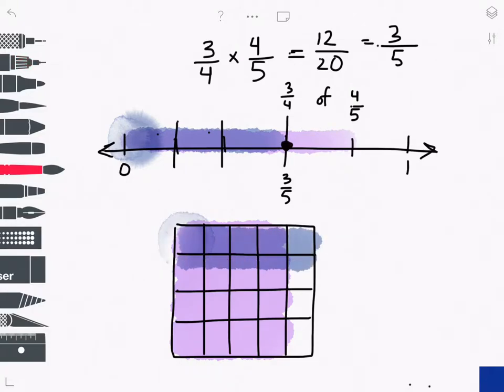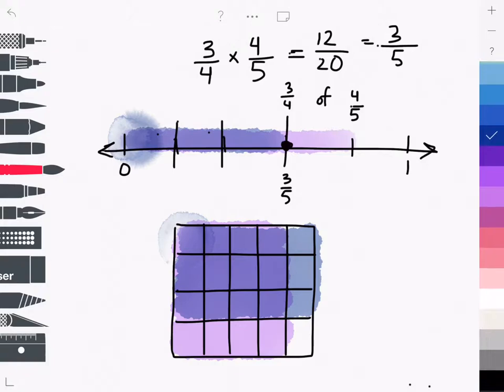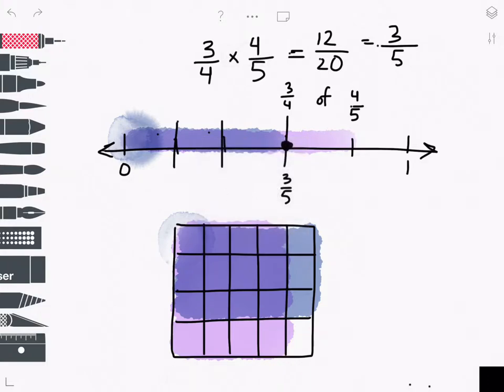1, 2, and 3. You can see that this overlapping area represents my product: 12 shaded boxes out of 4 times 5, which is 20 total boxes.